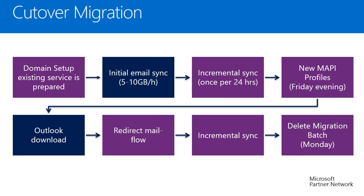The first moment users are affected is when you create new MAPI profiles. Best practice is to do this on a Friday evening, giving the weekend for Outlook clients to download all mailbox content. During the weekend, redirect mail flow by changing the MX record — from this point all incoming emails arrive in cloud mailboxes. Wait for at least one incremental synchronization to sync all incoming emails. A best practice is to delete the migration batch on Monday once everything is complete.